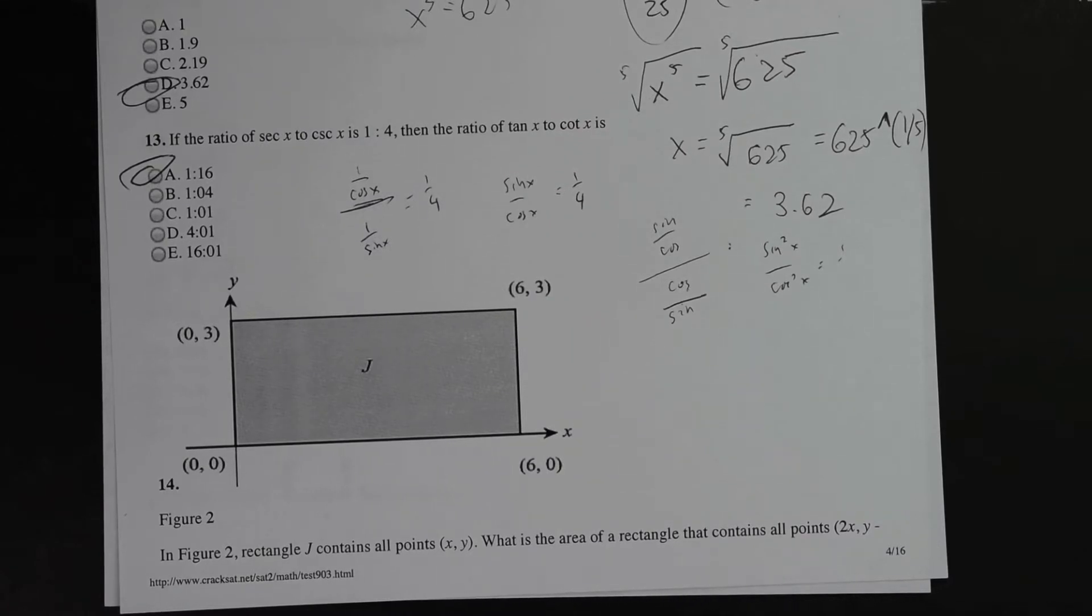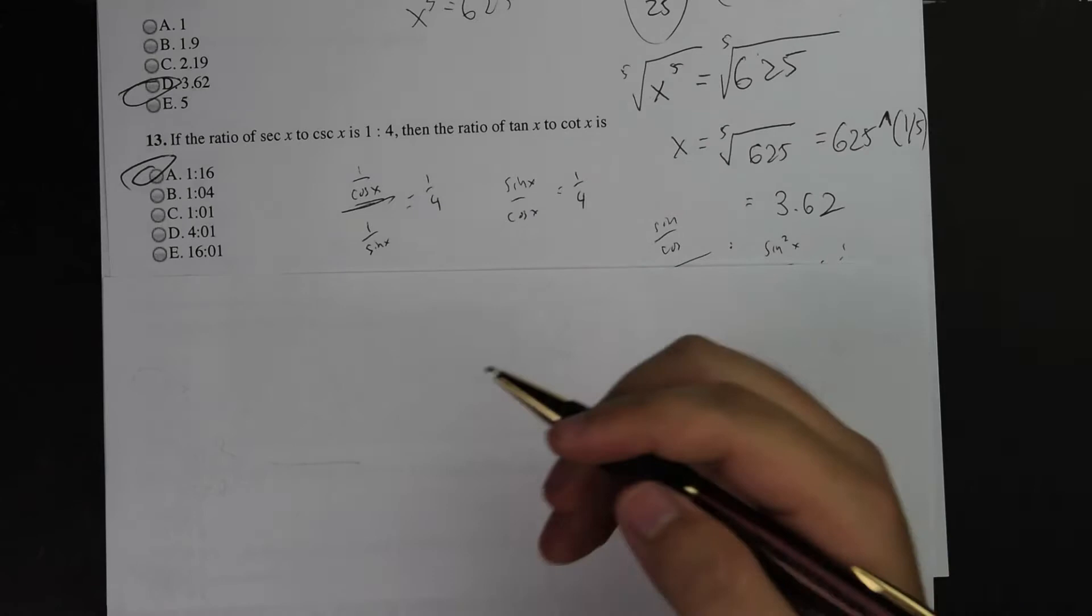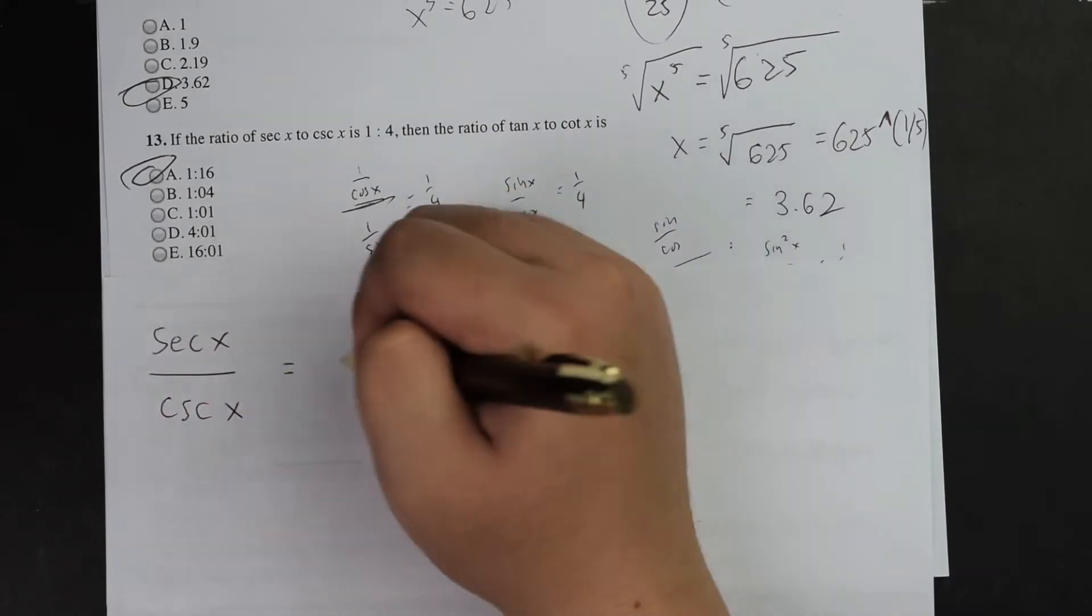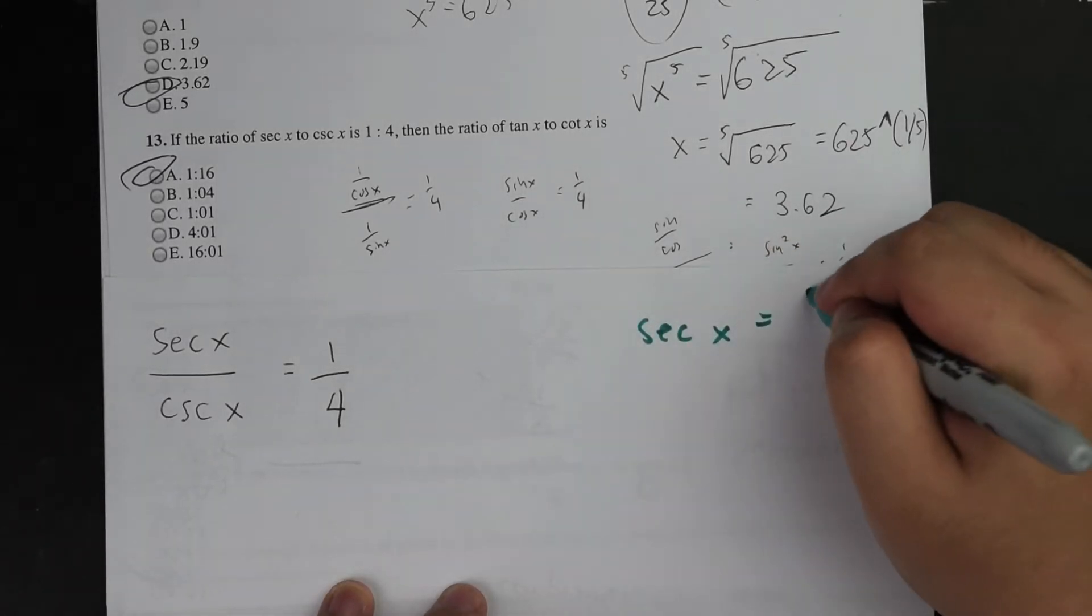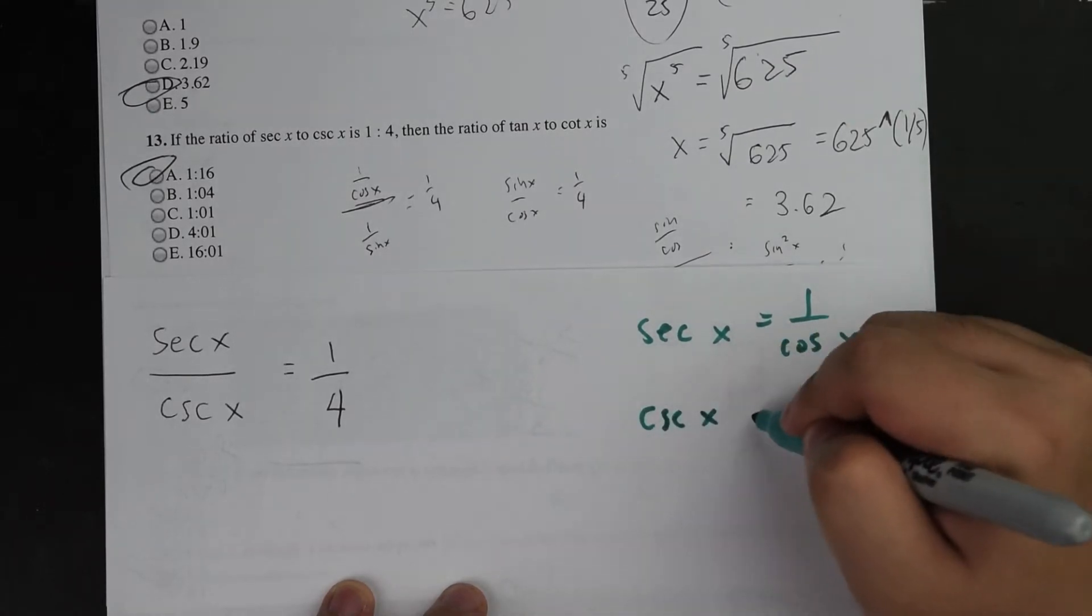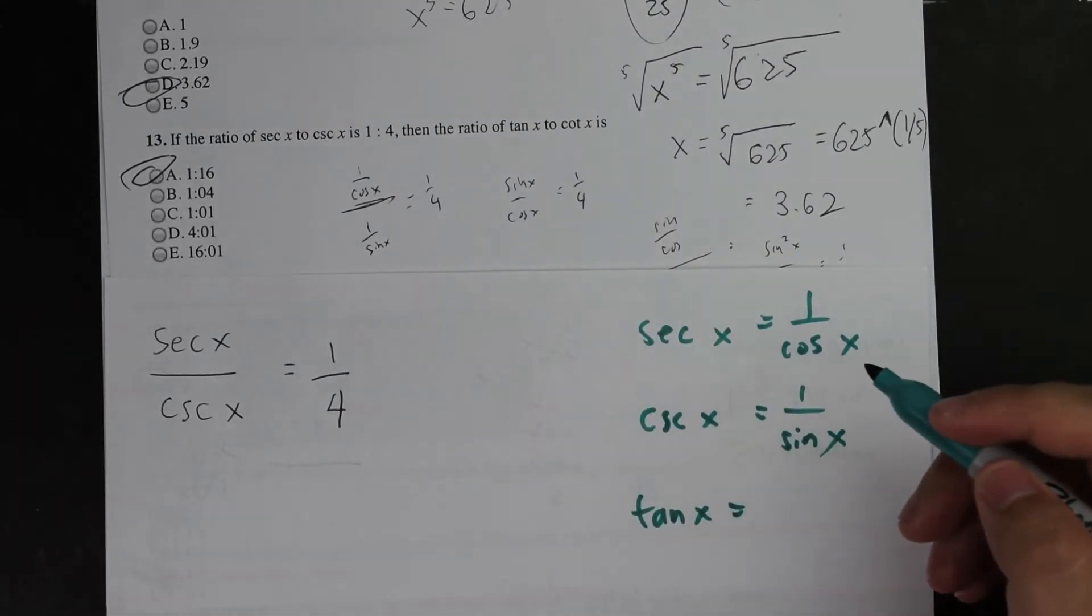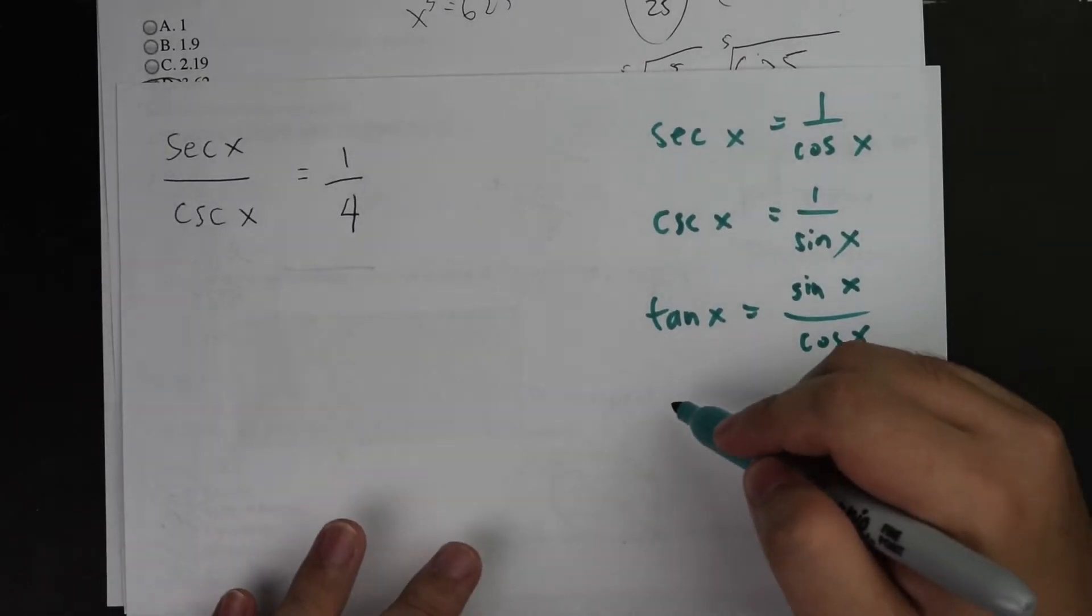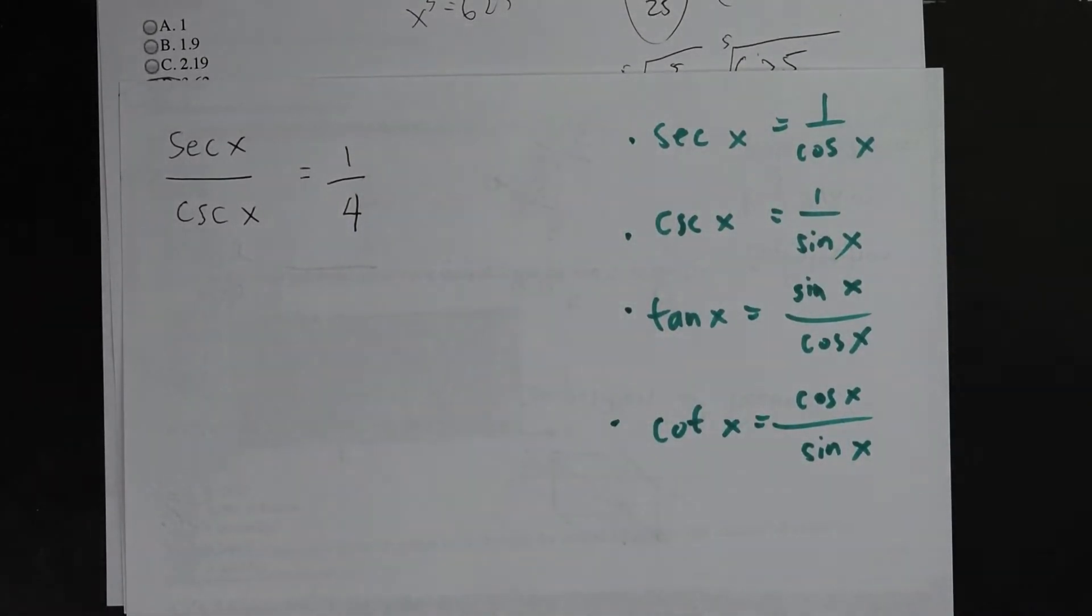For this question, this is a trigonometric question just based on trig functions. Make sure you know your trig functions in general. I do want to review certain terminologies or concepts that are important or relevant to this. Secant x equals 1 over cosine x, cosecant x equals 1 over sine x, tangent x equals sine x over cosine x, and cotangent x equals cosine x over sine x.